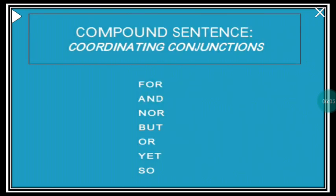Now let us look at the list of coordinating conjunctions: for, and, nor, but, or, yet, and so. If you look at them, they form an acronym — FANBOYS. F for 'for,' A for 'and,' N for 'nor,' B for 'but,' O for 'or,' Y for 'yet,' and S for 'so.'